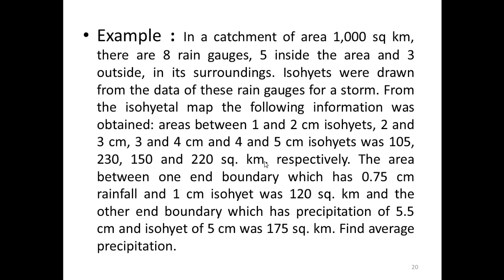Next example: In a catchment of area 1000 square kilometers, there are 8 rain gauges — 5 inside the area and 3 outside in surrounding areas. Isohyets were drawn from the data of these rain gauges for a storm. From the isohyetal map, the areas between the 1–2 cm, 2–3 cm, 3–4 cm, and 4–5 cm isohyets were 105, 230, 150, and 220 square kilometers respectively. The area between the boundary (0.75 cm rainfall) and the 1 cm isohyet was 120 square kilometers, and the area between the 5 cm isohyet and the far boundary (5.5 cm precipitation) was 175 square kilometers.